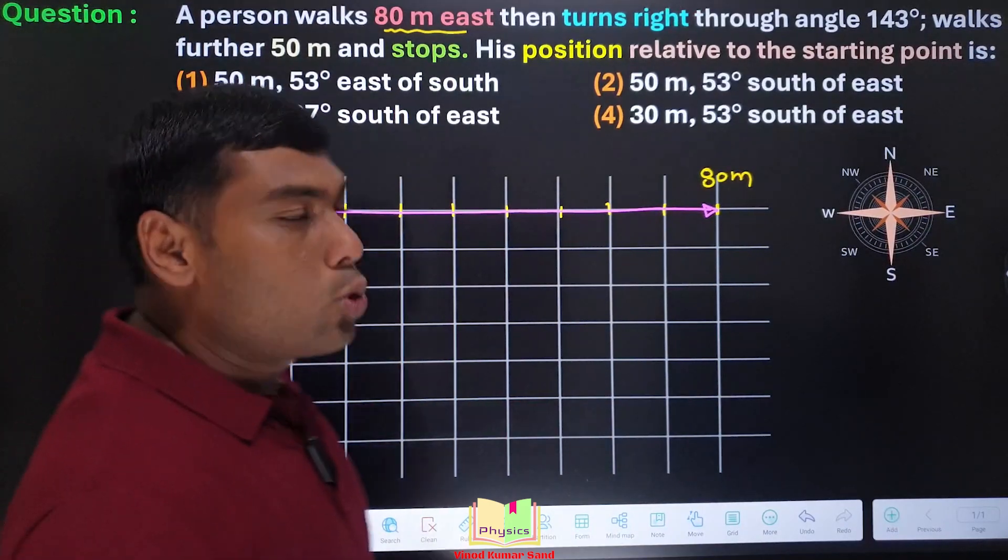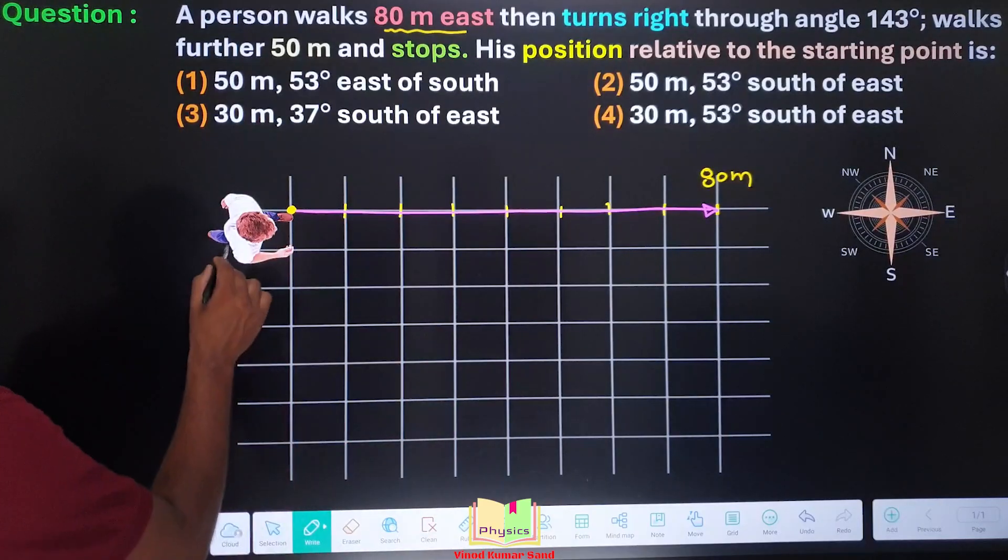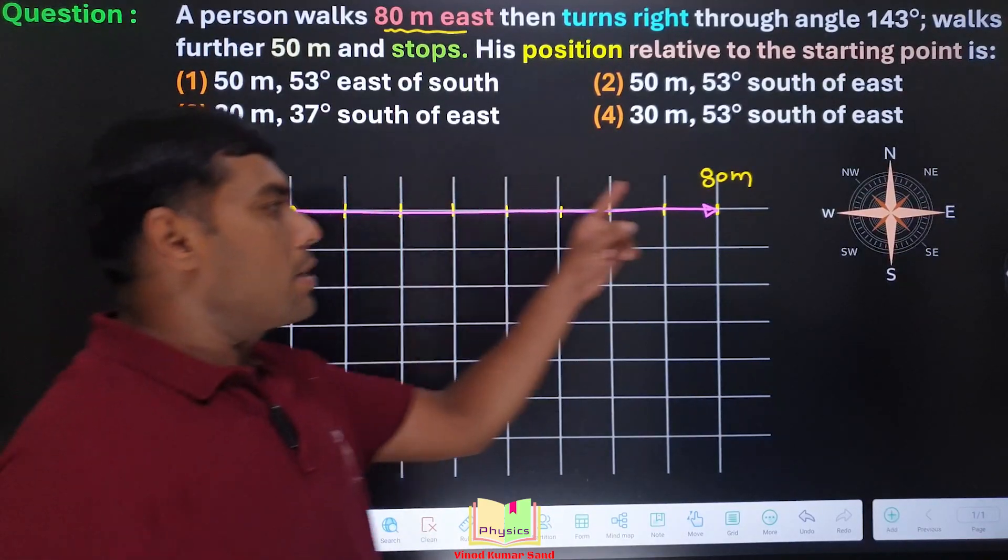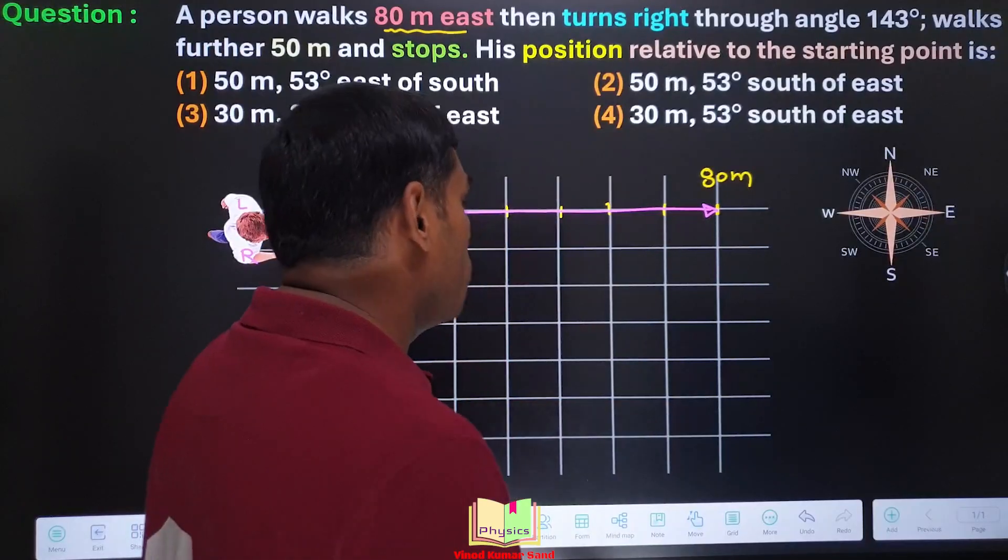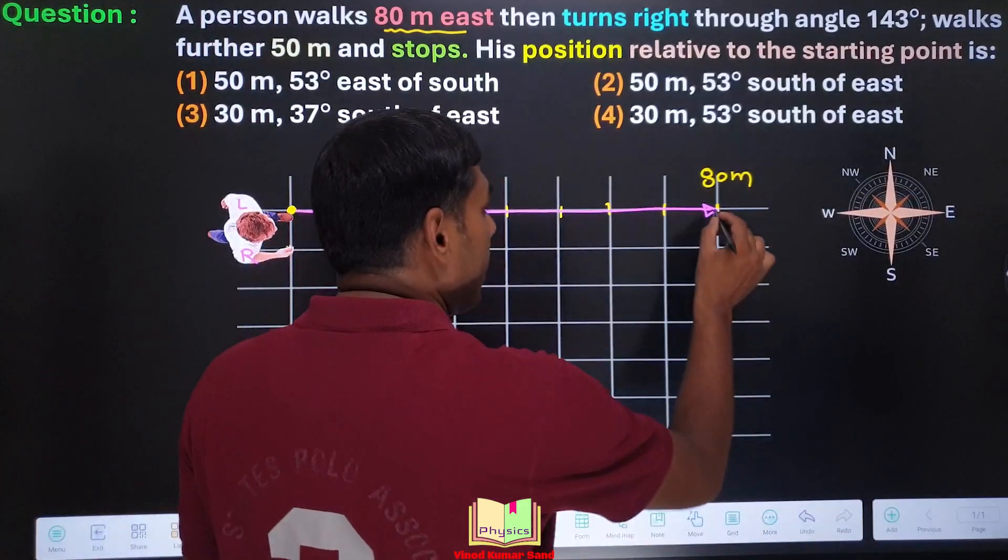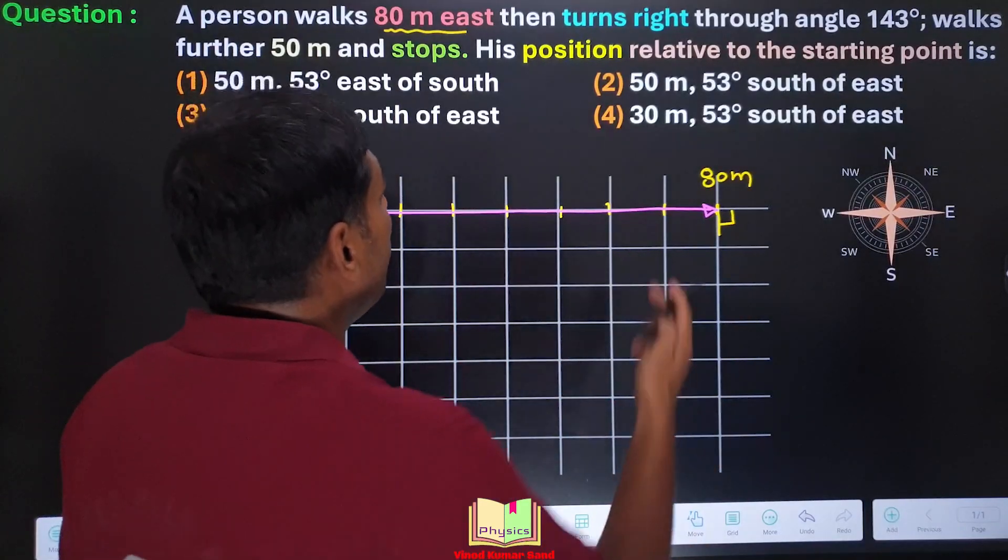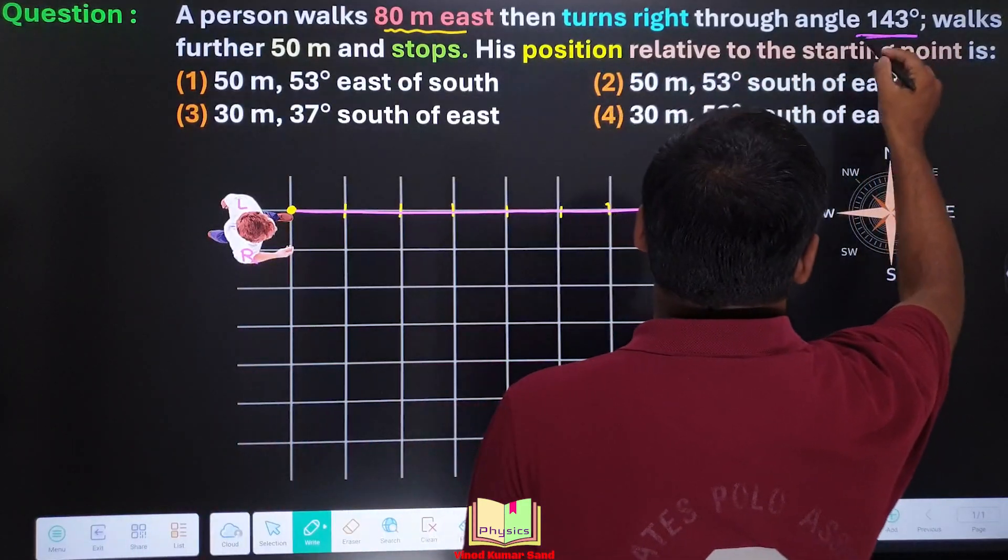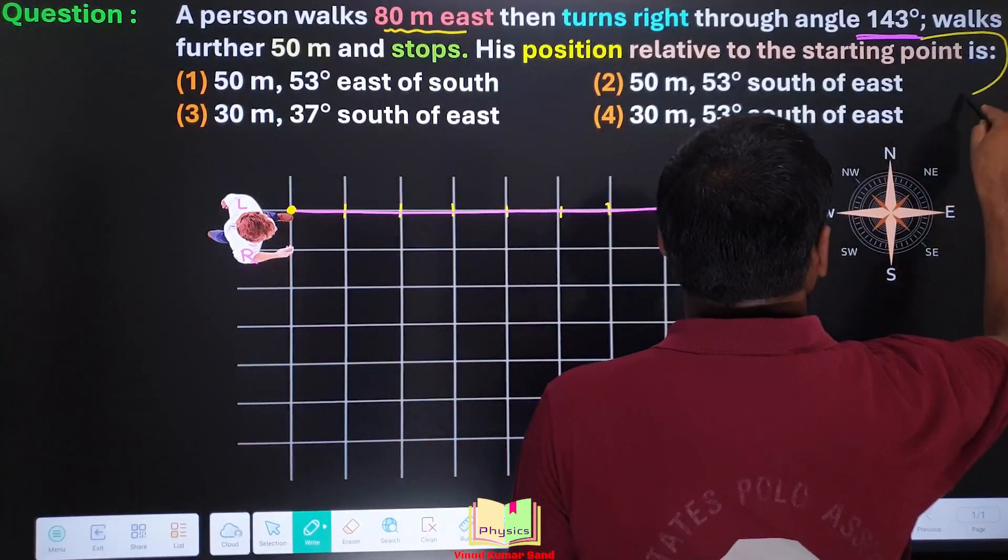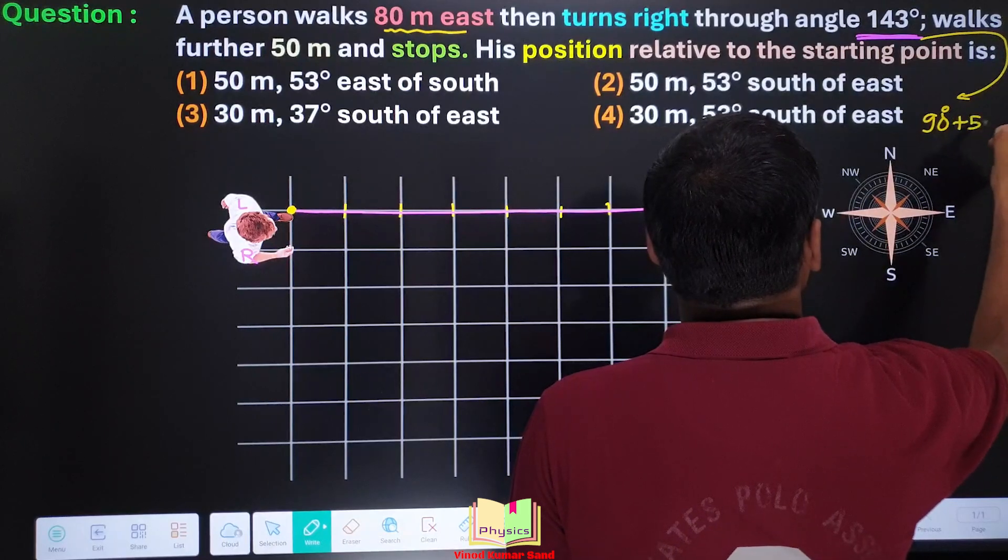Then he turns right through an angle of 143 degrees. If we look carefully, this is the right side, this is the left side of this person. The person reaches here and he has to turn right, means he has to turn in this direction. Angle here is 90 degrees, but we don't need 90 degrees angle, we need the angle 143 degrees. 143 degrees, we can think of this is basically 90 degrees plus 53 degrees.